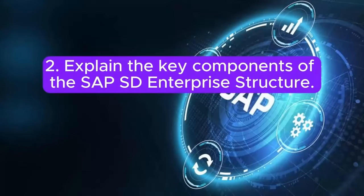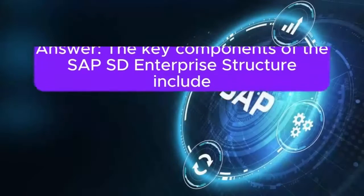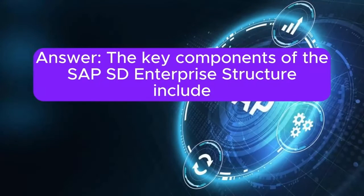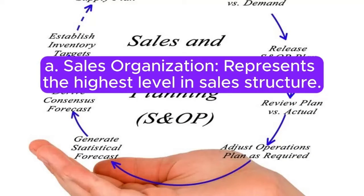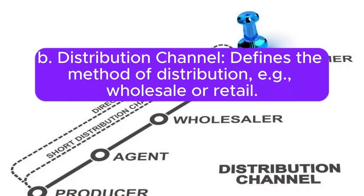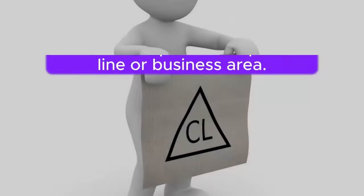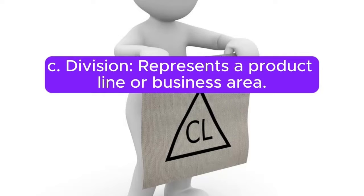Question 2: Explain the key components of the SAP SD enterprise structure. Answer: The key components include: A) Sales organization, which represents the highest level in the sales structure. B) Distribution channel, which defines the method of distribution, for example wholesale or retail. C) Division, which represents a product line or business area.